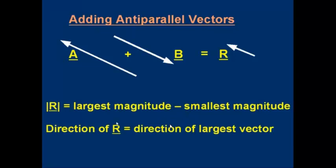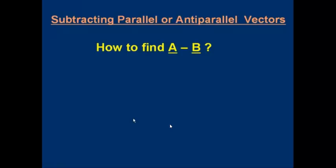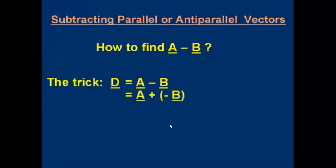Let's talk about how to subtract vectors if they're parallel or anti-parallel. This will work for either case. How do you work out A minus B? There's a trick: the difference A minus B can be worked out by turning it into an addition. A minus B is the same thing as A plus minus B. If I can find minus B — which is a vector — I can just do a normal addition of it to A. So I've got to find minus B first and then just add it onto A.